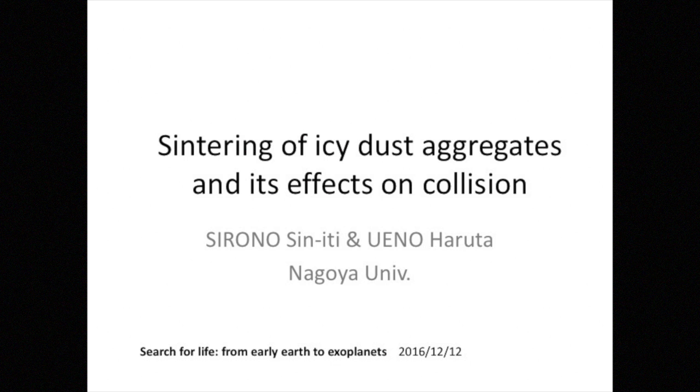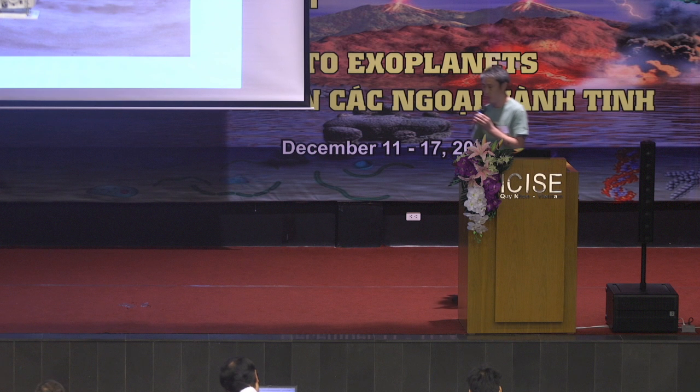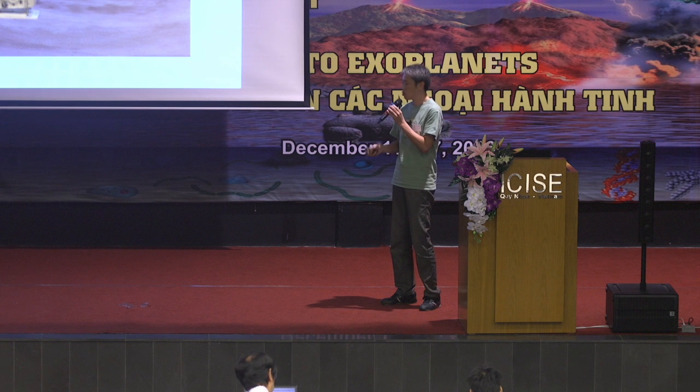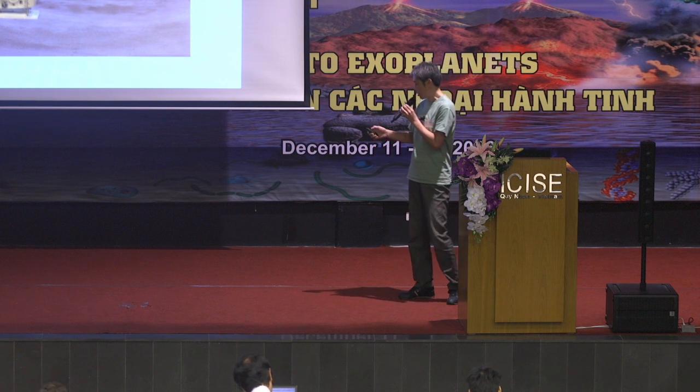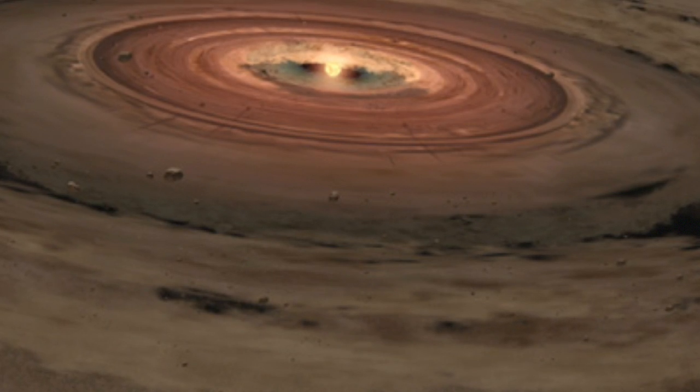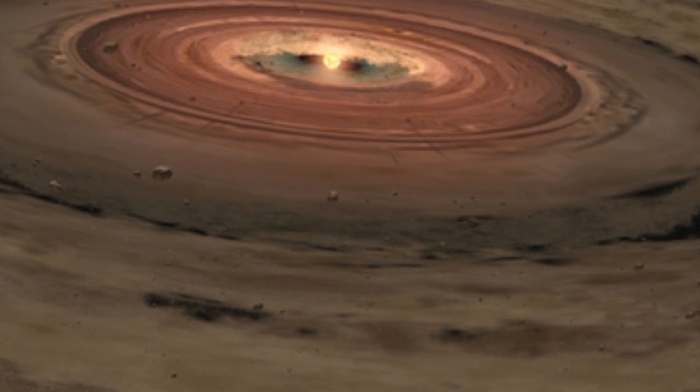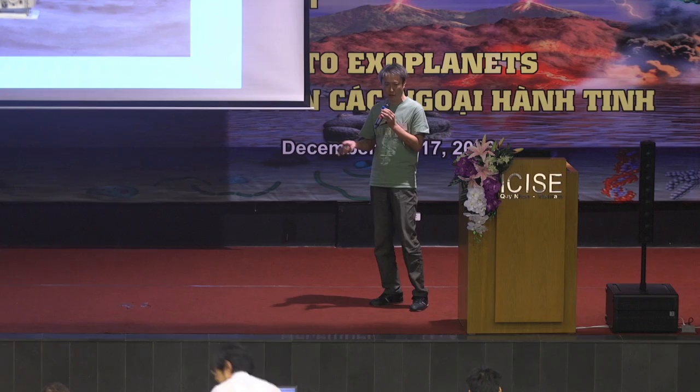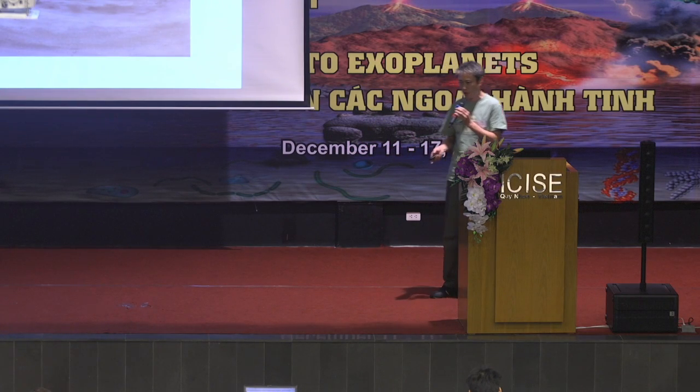I'm going to talk about the initial stage of planetary formation based on the co-acquisition scenario. First of all, I would like to remind you briefly the formation process of planets based on co-acquisition scenario. This is a protoplanetary disk and this disk contains gas and dust. And the dust grains compose the material of solid bodies of the planetary system.